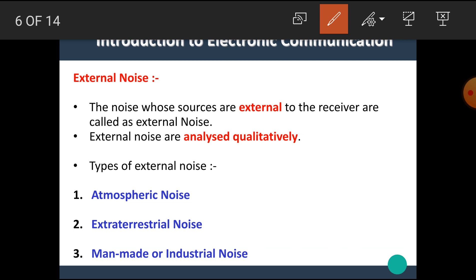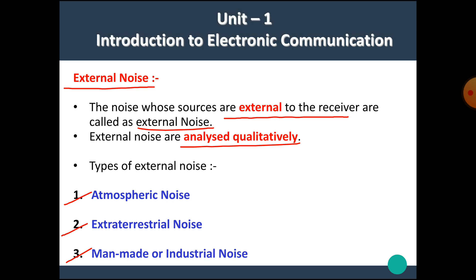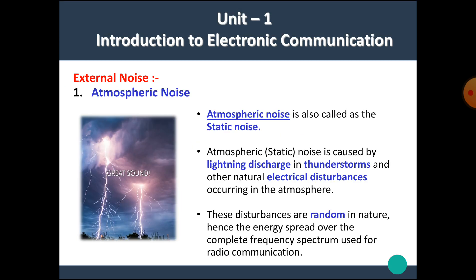First, let's see what is meant by external noise. The noise whose sources are external to the receiver are called as external noise. External noise is analyzed qualitatively. As previously seen, there are three types of external noise: atmospheric noise, extraterrestrial noise, and man-made or industrial noise. Let's see them one by one.